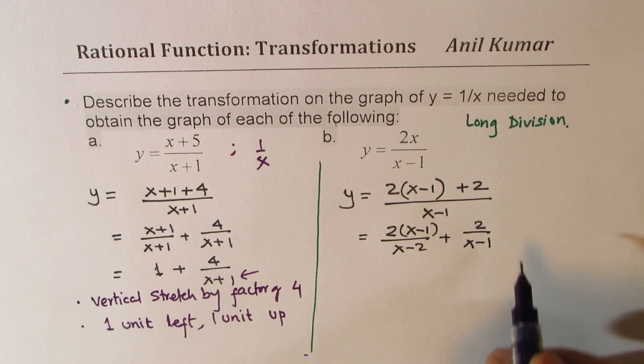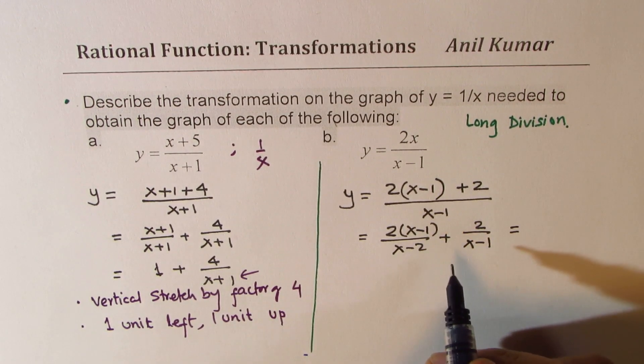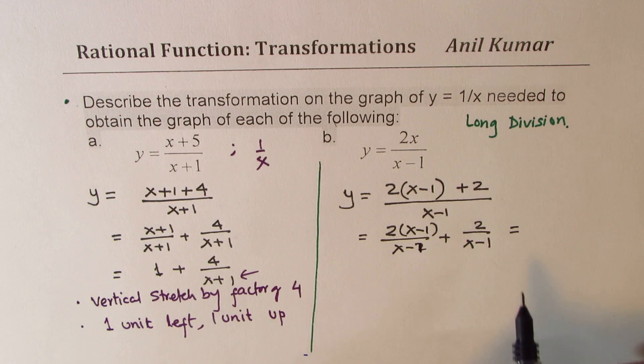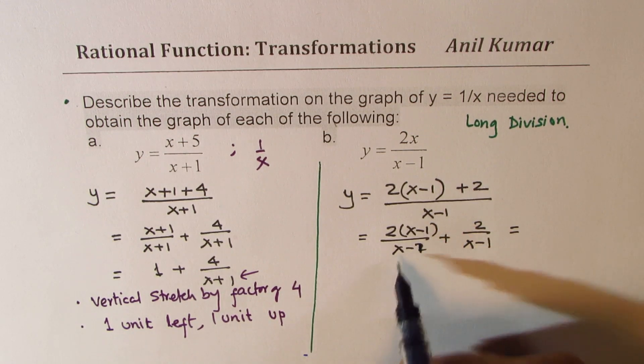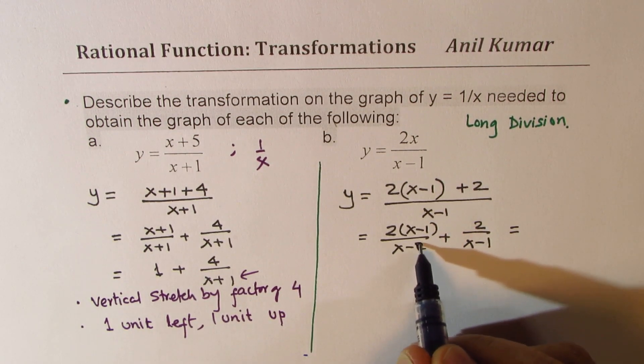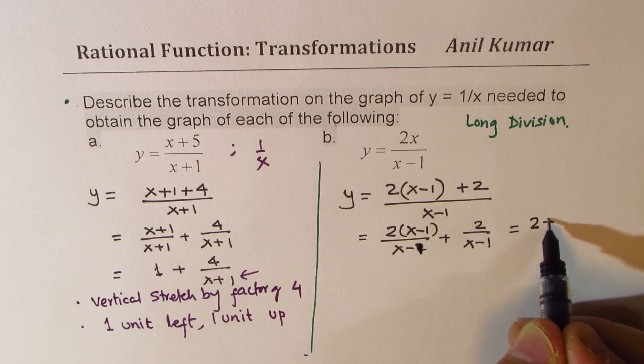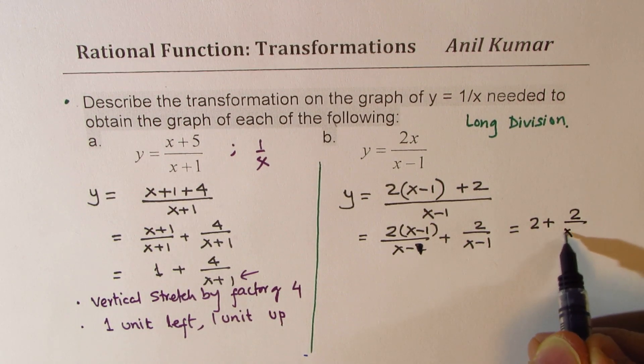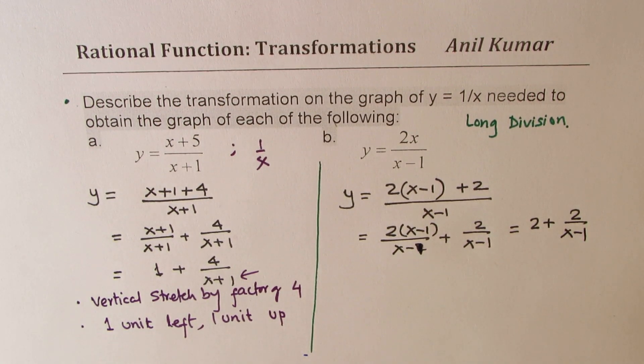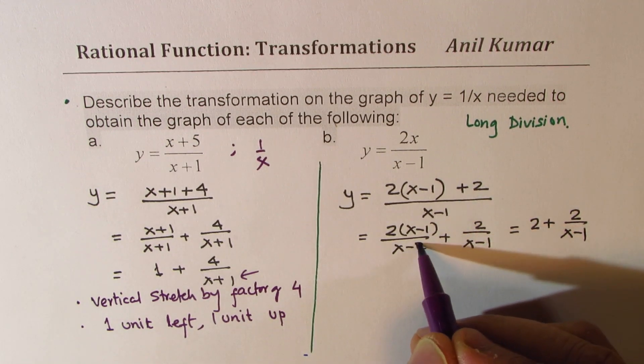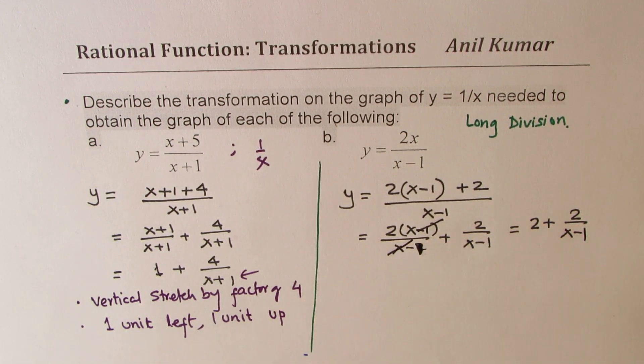And that is, sorry, this is x minus 1. So x minus 1, x minus 1 cancel. So we get 2 here plus 2 over x minus 1. Does it make sense to you? So this is x minus 1. So they cancel. Do you see that part? So we get 2 plus 2 over x minus 1. And now you can easily write down the transformation.